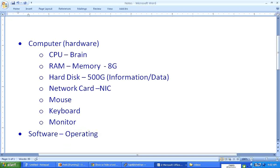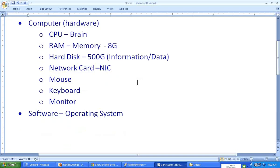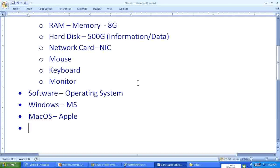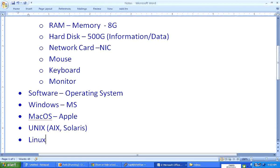The most common operating system is Windows from Microsoft. Another one is Mac OS from Apple. Then there are various flavors of Unix — things like AIX and Solaris. And then there is Linux, which I consider a flavor of Unix as well, though many people don't. I'll explain why that distinction exists. These are the various operating systems available in the market right now.